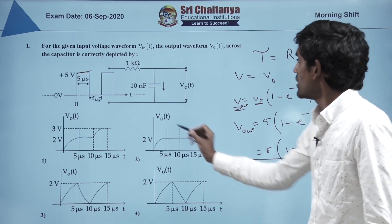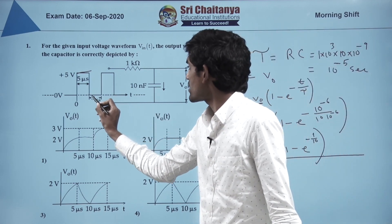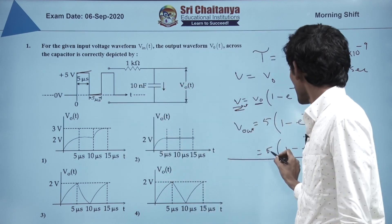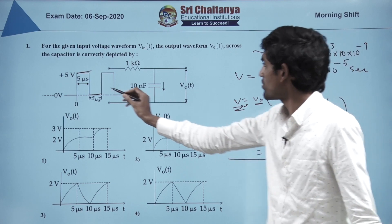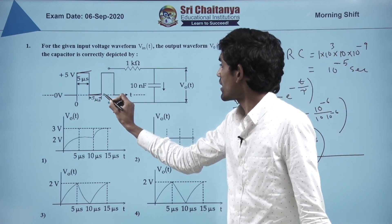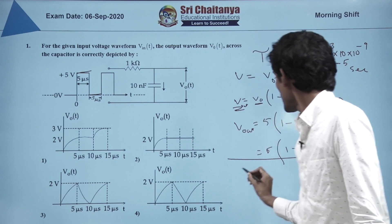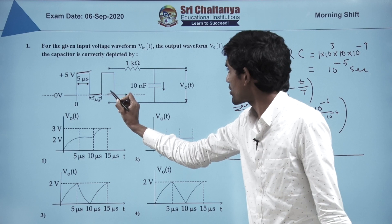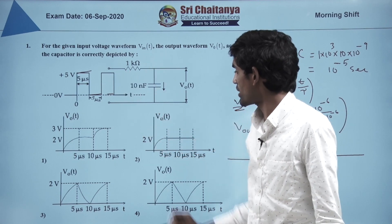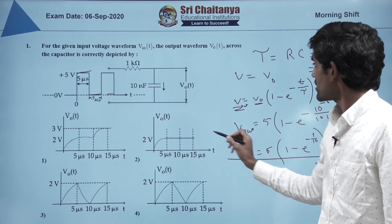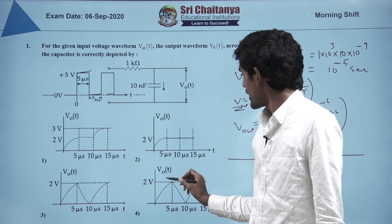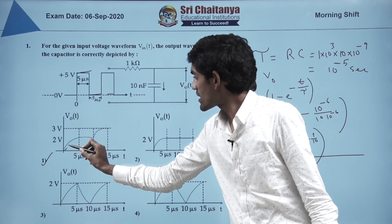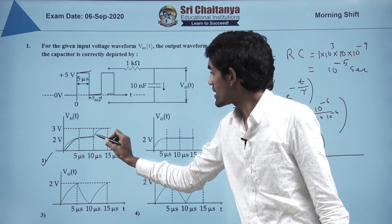Let us go to the next analysis. The next 5 microseconds there is no voltage applied, so it will continue with the same voltage as at the end of the first 5 microseconds. The third 5 microseconds, it is going to charge up again, increasing the voltage. So the only correct option is the first option: charging up, then constant, then charging up again.